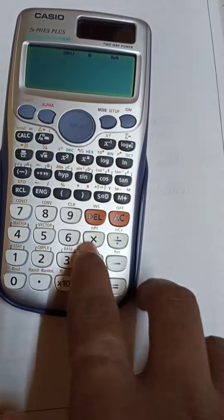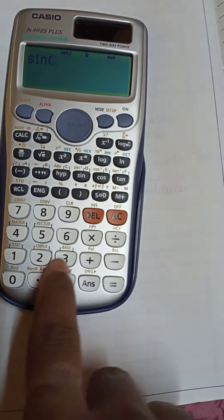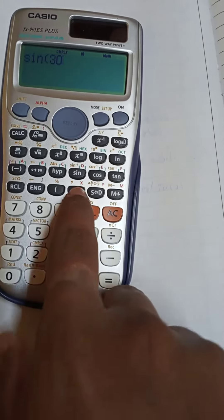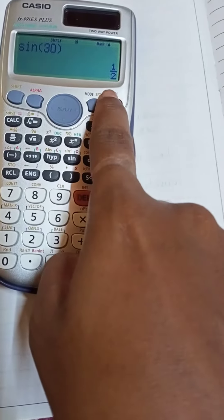And now write sine 30 and close the bracket. The answer is 1 by 2 now.